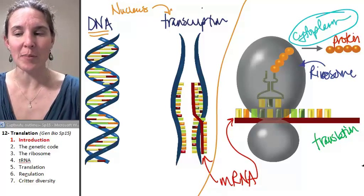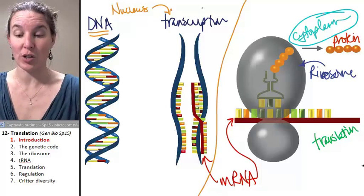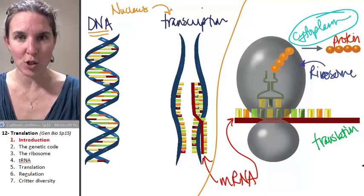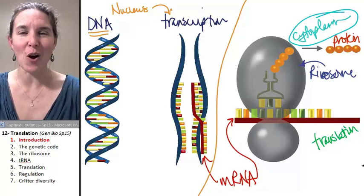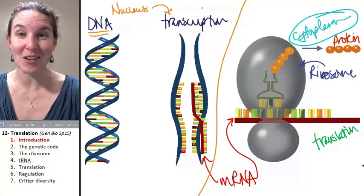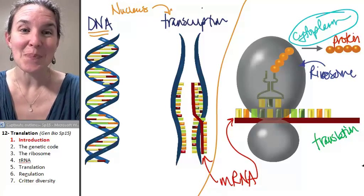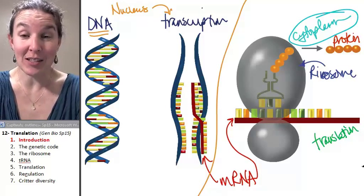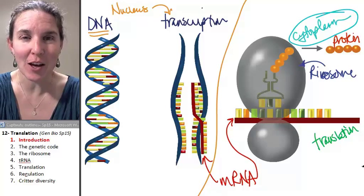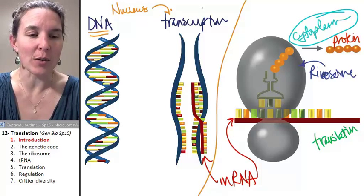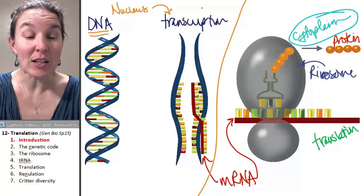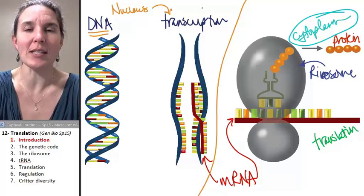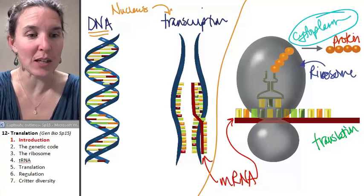The genetic code is something that took a significant chunk of time to figure out, but once we figured it out, almost every critter on the planet goes through the process of translation using the same code. That alone kind of blows my brain. So let's take a look at what this genetic code is.